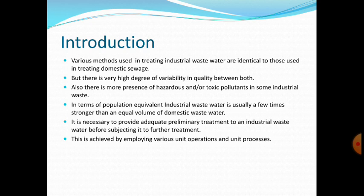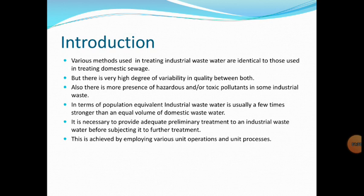Second, there are large variations in the flow rates of industrial wastes. And third, the presence of hazardous or toxic pollutants in some industrial waste. In terms of population equivalent, industrial wastewater is usually a few times stronger than an equal volume of domestic sewage, meaning industrial waste has a higher concentration of pollutants. Given the possible presence of hazardous or toxic pollutants, adequate preliminary treatment must be provided before further treatment.